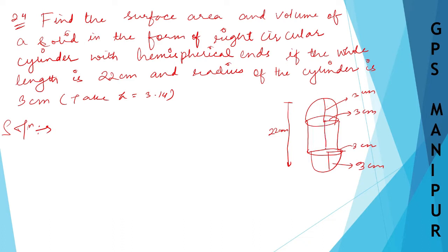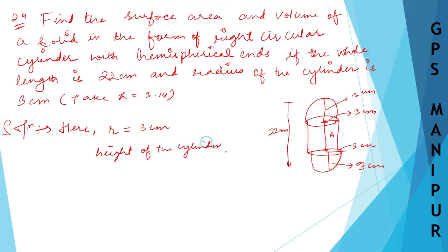So I need to find out H here — the height of the cylinder, from one end to the other. The radius of the sphere as well as the cylinder is the same, that is 3 centimeters. H, the height of the cylinder, is equal to the total 22 minus the two hemisphere radii: 22 minus 3 minus 3 equals 22 minus 6, which is 16 centimeters.